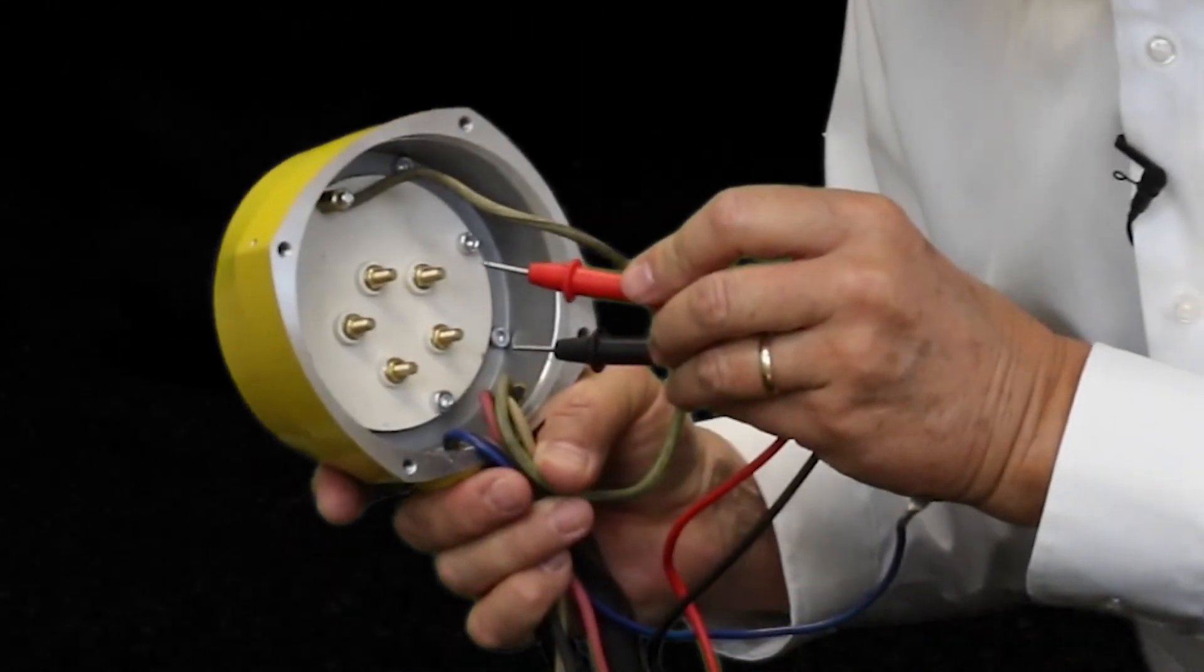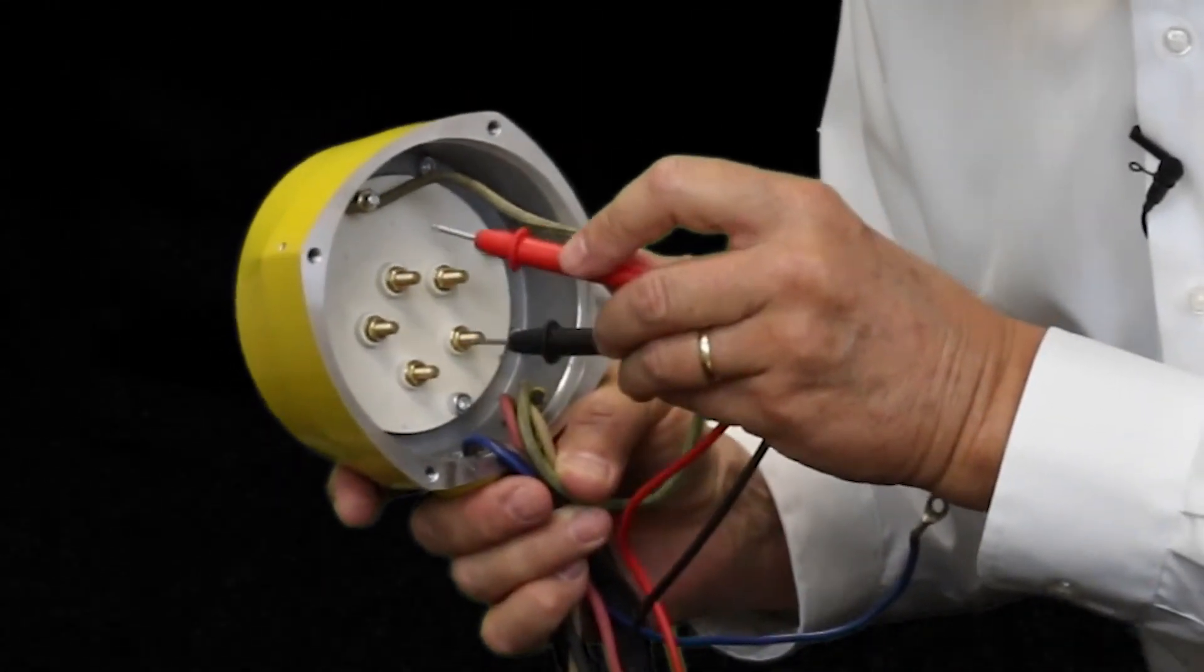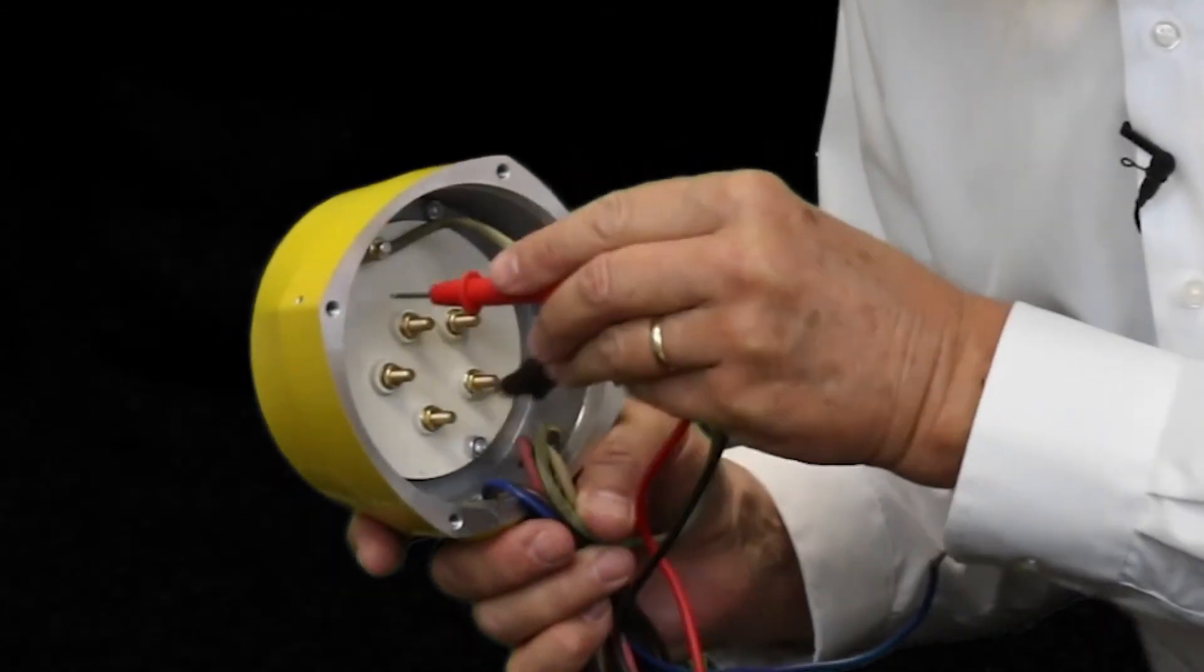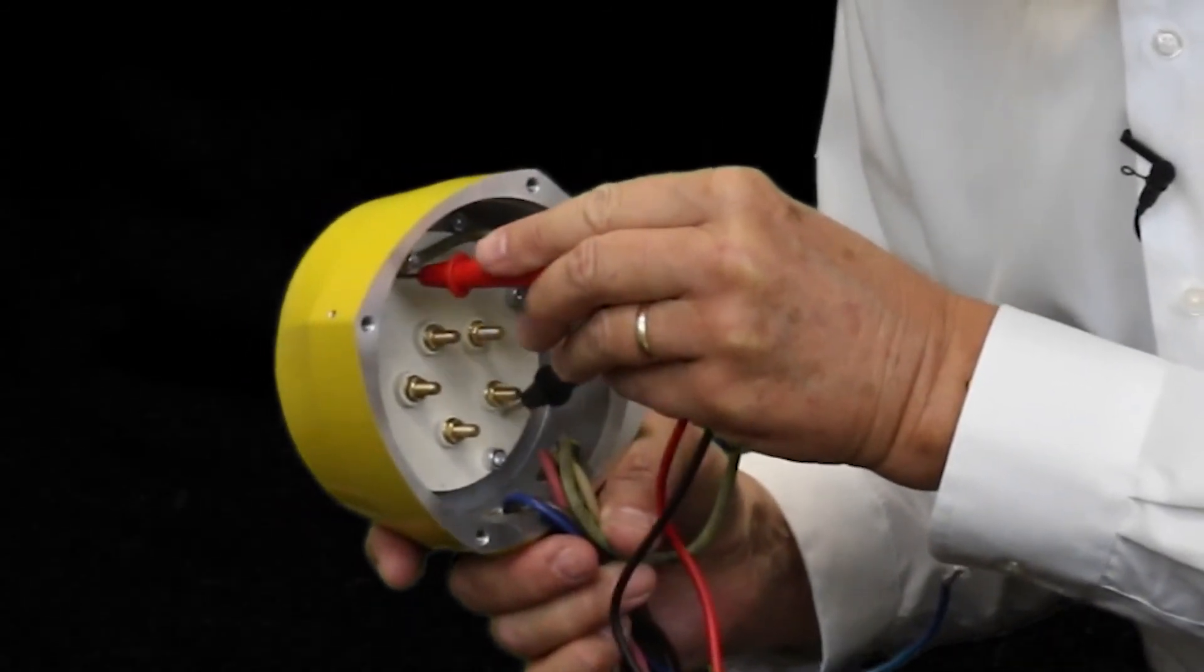And here's how you check the resistance to ground between the thermal protection switch and ground. Touch the probe to T1 and the ground probe.